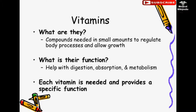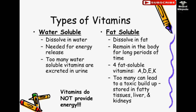Vitamins: What are they? Vitamins are compounds needed in small amounts to regulate body processes and allow growth. They help with digestion, absorption, and metabolism. Each vitamin provides a specific function. Types of vitamins: Water-soluble vitamins dissolve in water and are needed for energy release — too many are excreted in urine. Fat-soluble vitamins (A, D, E, K) dissolve in fat and remain in the body for a long time — too many can lead to a toxic buildup stored in fatty tissues, liver, and kidneys. Vitamins do not provide energy.